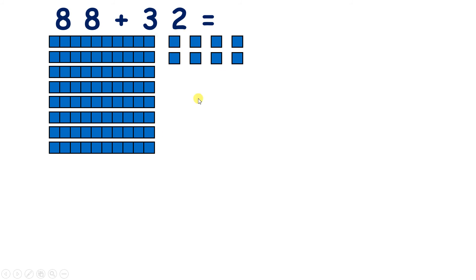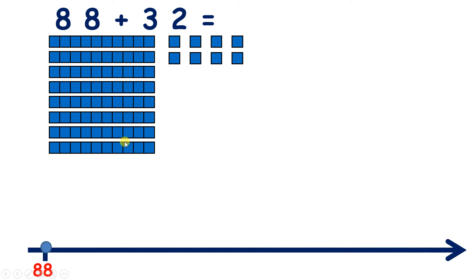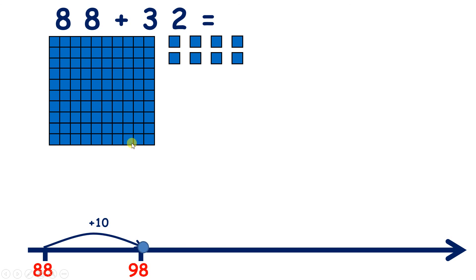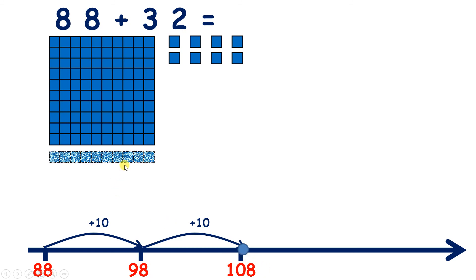Again, let's show 88 plus 32 using blocks. So we start with eight 10s and eight units — we start on 88. If we add 10, we now have nine 10s and eight units, so we have 98. If we add another 10, we now have 10 tens — and we can push them together to make a 100 square. So now we have 108, and adding our third 10 gives us 118.